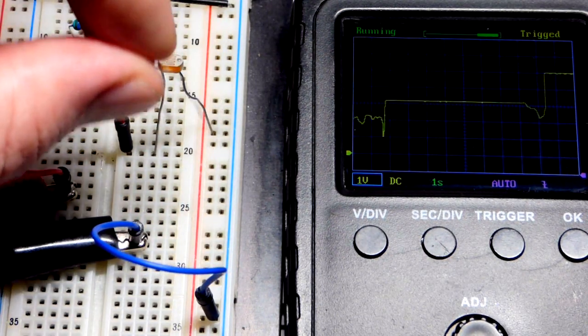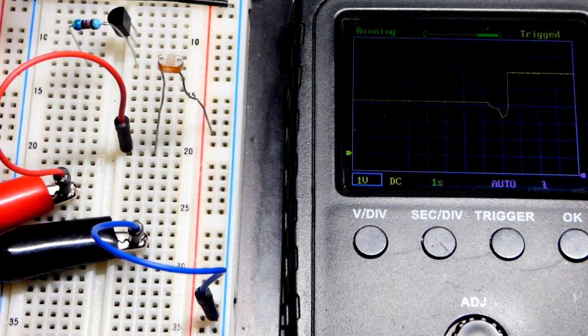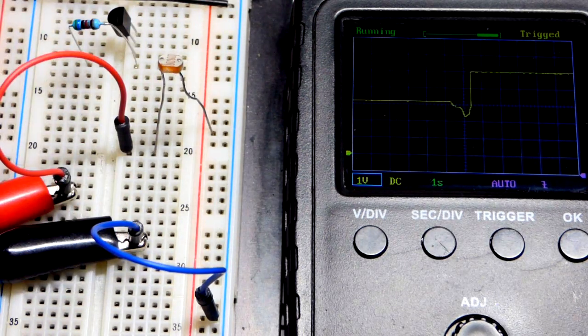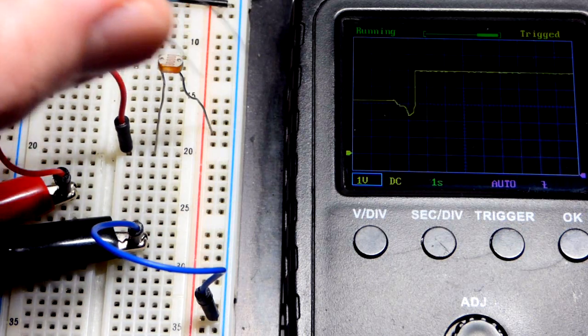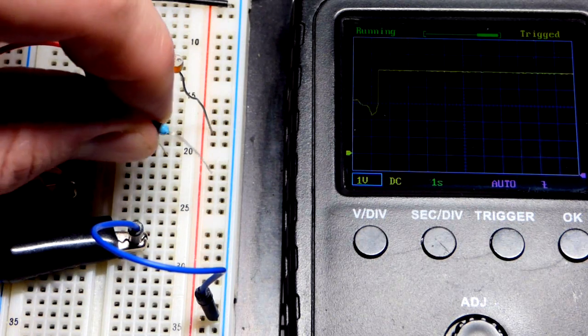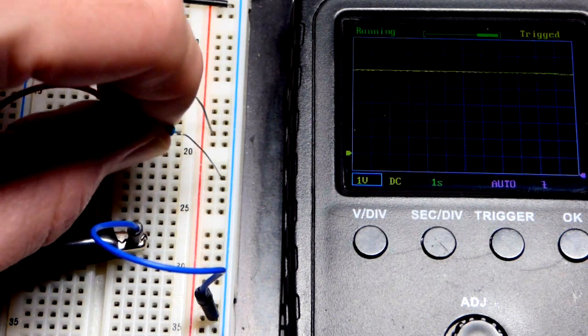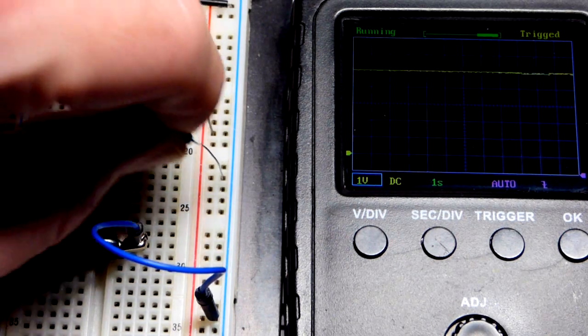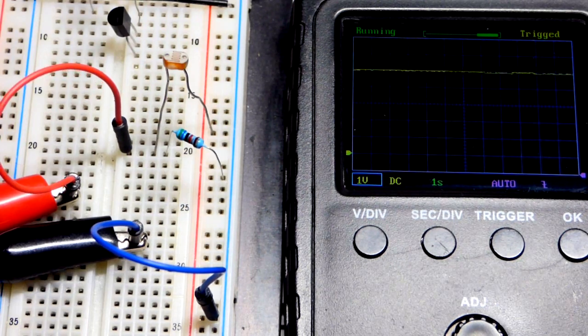So you can change the sensitivity with the fixed resistor. And so the lower value fixed resistor, the harder it's going to be to change the voltage based on the light dependent resistor. And the higher the value, the easier. So now we're going to go back to the 5.6K, and you can see it's bright enough now that we have the full voltage.